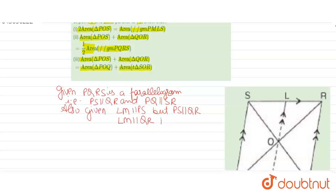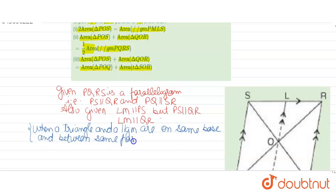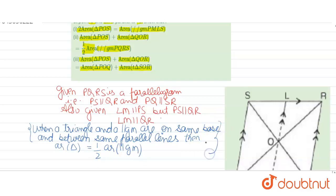Now we have a theorem which we are going to use here. According to that theorem, when a triangle and a parallelogram are on the same base, then the area of the triangle is equal to half of the area of the parallelogram. We are going to use this theorem here.